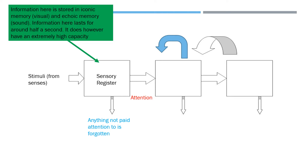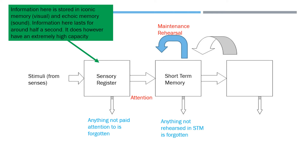The arrow going across is attention — paying attention is the only thing that will let memories go into your short-term memory. Short-term memory is the next store. To stay in your short-term memory, there has to be some kind of rehearsal. Maintenance rehearsal is the loop going over the top of short-term memory, and anything that is not rehearsed at all is completely forgotten. You might have paid attention to it, but if you've not rehearsed it, that will be gone as well.